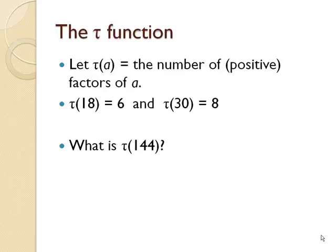The tau function, tau of A, is the number of positive factors of A. Tau of 18 is 6 because 18 has 6 different positive factors. Tau of 30 is 8 because there are 8 different factors of 30. What is tau of 144?